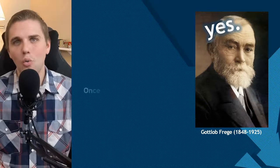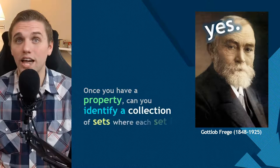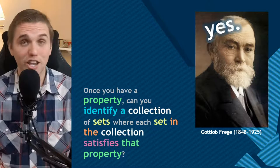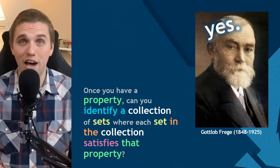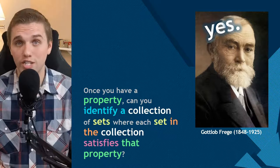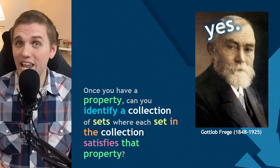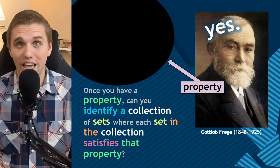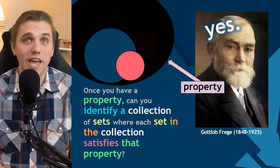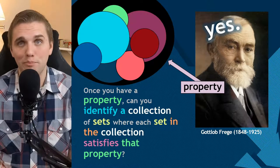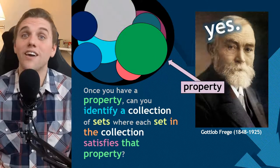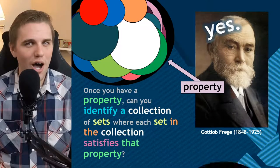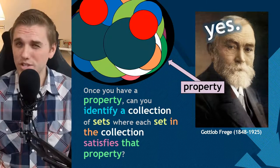Let me ask you a question: once you have a property, can you identify a collection of all sets that satisfy that property? For Frege, the answer was yes. He called this Basic Law 5, which is sometimes referred to as Unrestricted Comprehension. So instead of starting with a set and identifying properties that the set satisfies, we identify a property first, and this property gives rise to a collection of every set that satisfies that property. This is a collection of objects, but in many ways this collection of objects should be forbidden — and we'll see why that is later on.